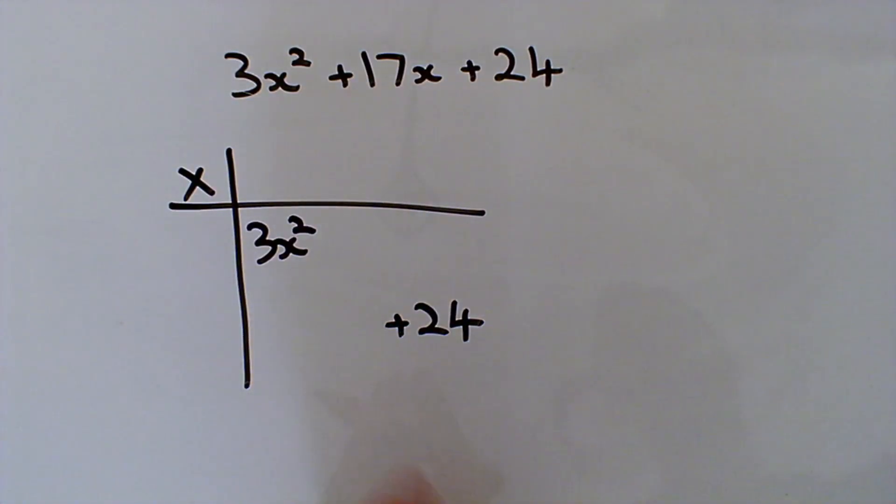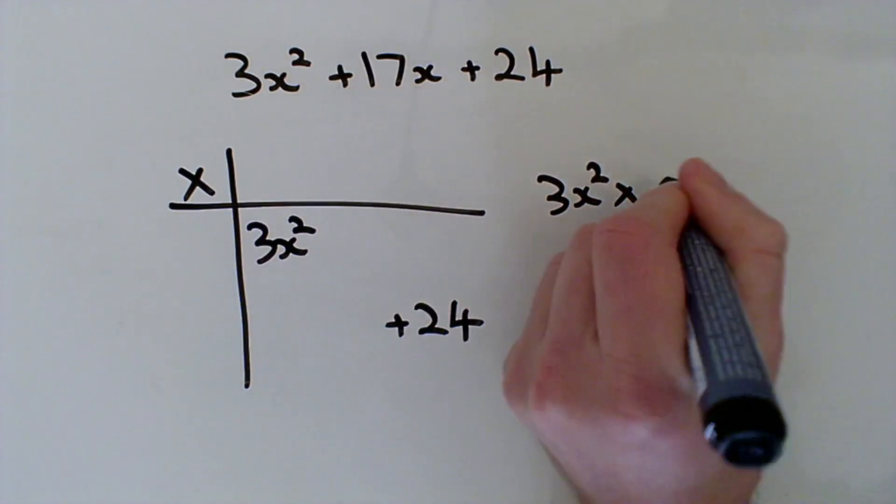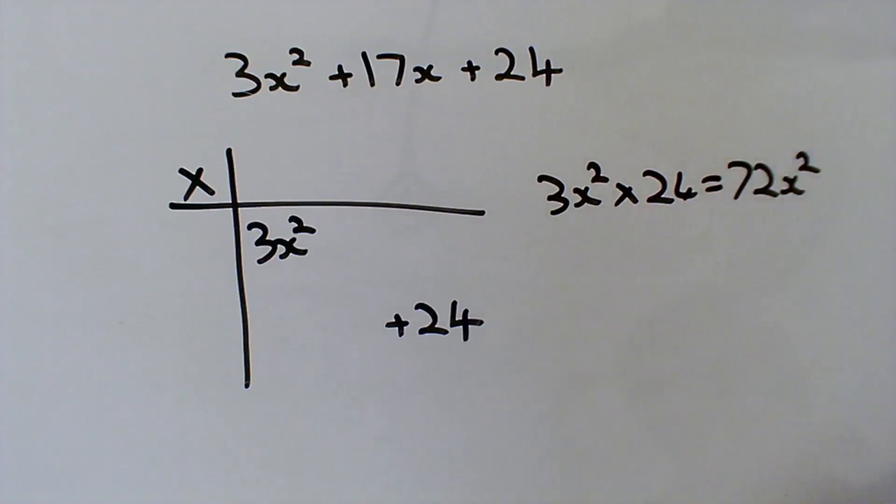Now, the nice thing about a grid method or a ratio table is that the diagonals always multiply to the same product. Now, this diagonal here is 3x squared times by 24, which is 72x squared.